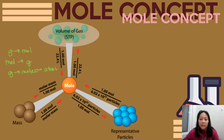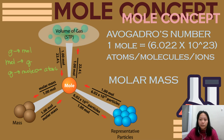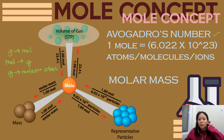The first thing you need to know is Avogadro's number. Please memorize this number because it will be involved in a lot of problems in the next topics. Remember that in every one mole of a particular substance, there are 6.022 times 10 raised to 23 atoms, molecules, or ions — depending on what is your given.